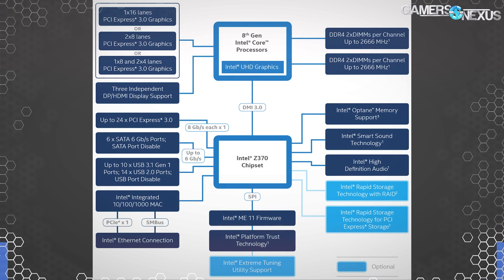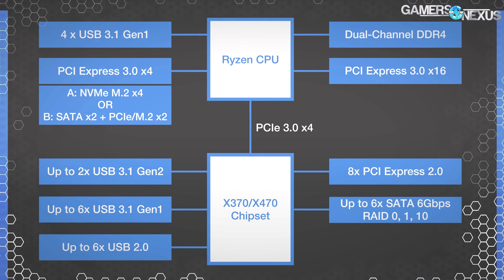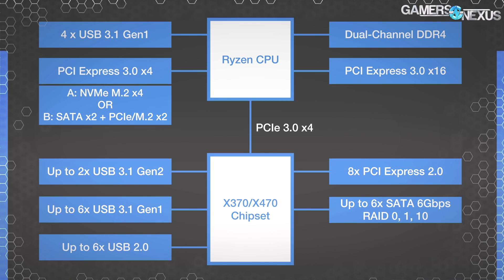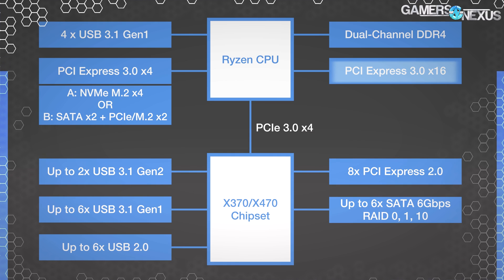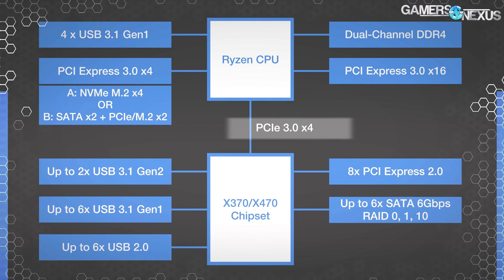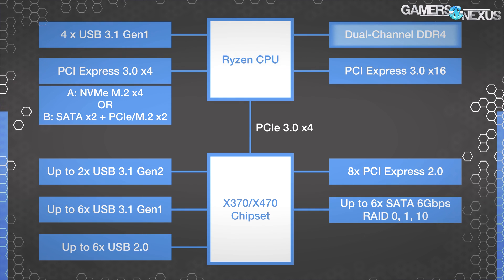AMD's modern Ryzen chipsets aren't too different from Intel's — the functionality and objective remain the same, although the specific implementation is a little different. AMD's X370 chipset block diagram looks similar. The CPU still hosts its own PCIe 3.0 lanes for direct GPU communication, just like Intel's configuration, but Ryzen has more PCIe lanes on the CPU. AMD's CPU also has an integrated memory controller, or system-on-chip more appropriately, allowing a direct line to the memory from the CPU.